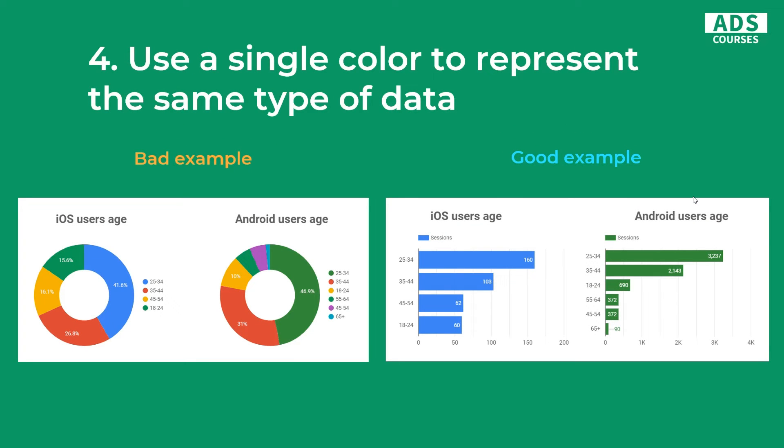The next tip is to use a single color to represent the same type of data, because sometimes less is more. In the good example, we have iOS users age and Android users age, and we simply use the same color for each operating system. We use the bar chart, which is the better solution in this example. In the bad example on the left, we use a pie chart with a lot of colors, and it's actually misleading because the green color on the Android users age chart is a different age group than on the iOS users age chart. Sometimes using only one color is way better.